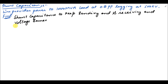Asalaamu alaikum. In today's lecture we are going to talk about the shunt capacitance addition at the end of the line in parallel with the load, whenever we have a voltage drop across the transmission line. In order to explain the shunt capacitance calculation, we are going to solve an example. In that example we have a load whose value is 1000 MVA at 0.8 power factor lagging.